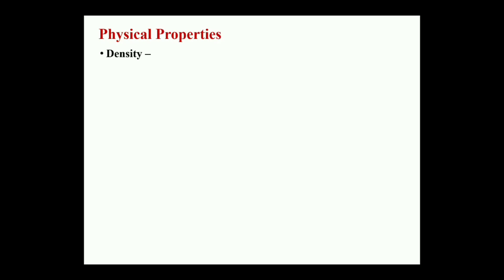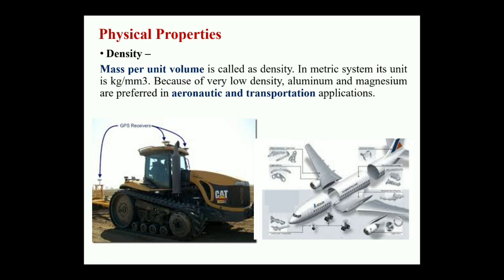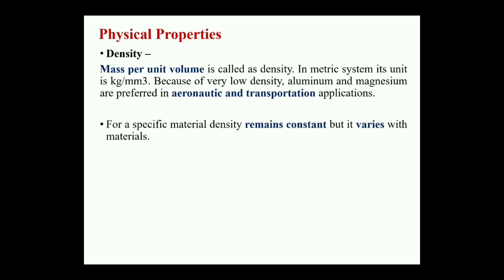In the case of physical properties, starting with density — density has an important role in engineering. Density means mass per unit volume. If I want to reduce the weight of components or machines, I should select materials with low density and high strength without compromising performance. Such low-density materials are used in aeronautics, transformers, transportation systems, military applications, and aerospace applications. For a specific material, density remains constant but varies across different materials.